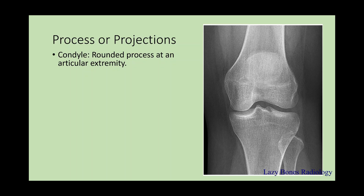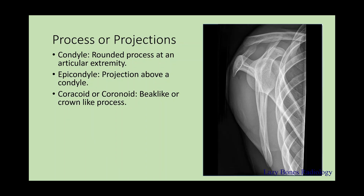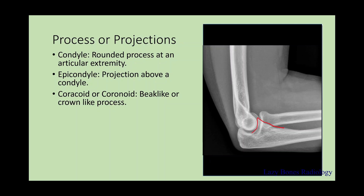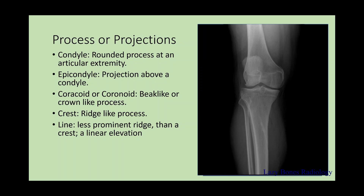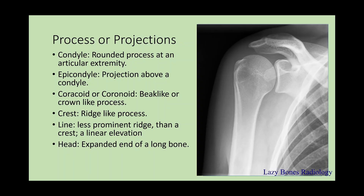Condyles are rounded processes at the end of articulating extremities. Epicondyles project above the condyles. The coronoid and coracoid are beak-like or crown-like processes — as you can see here, on the anterior surface of the scapula this is the coracoid process, while on the ulna this is the coronoid process. Crests are ridge-like processes — for example, the iliac crest and the intertrochanteric crest. Lines are less prominent than ridges or crests, as seen here on the tibia, where major muscles attach. The head is the extended end of a long bone which articulates — for example, the humerus articulates with the scapula to form the ball and socket joint.